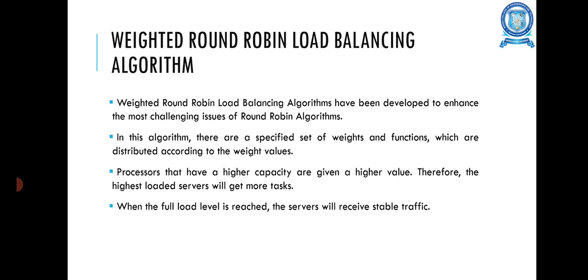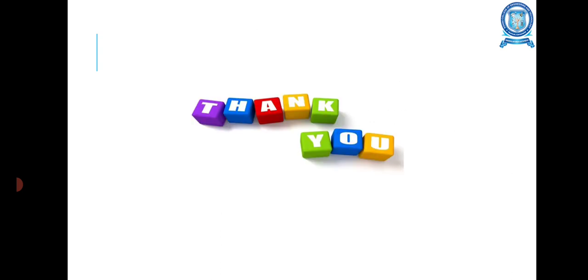The weighted round robin load balancing algorithm was developed to address the most challenging issues of the round robin algorithm. In this algorithm, there is a specific set of weights and functions distributed according to weight values. Processes that have a higher capacity are given a higher weight value, so the highest-capacity servers receive more tasks. When the full load level is reached, the servers will receive stable traffic.